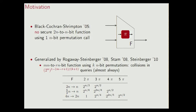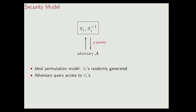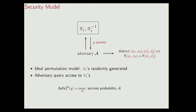So we look at 2N to 1N bit compression functions making three calls to an underlying permutation. The goal is collision resistance. We consider the ideal permutation model, meaning permutations are randomly drawn from the set of all permutations. We consider an information-theoretic adversary with unbounded computational power, and its complexity is measured by the number of queries the adversary makes to its oracles. The goal of the adversary is to find two input tuples x1, x2 and x1 prime, x2 prime that collide. The collision security is defined as the maximum success probability over all adversaries.